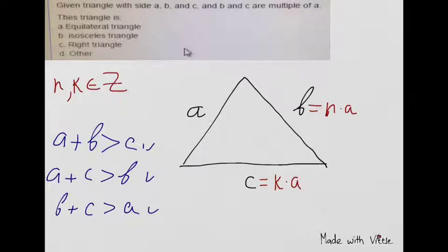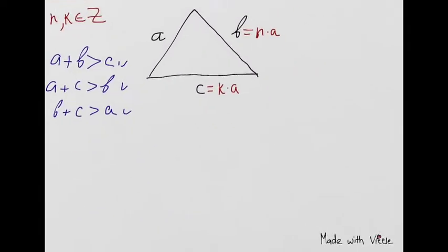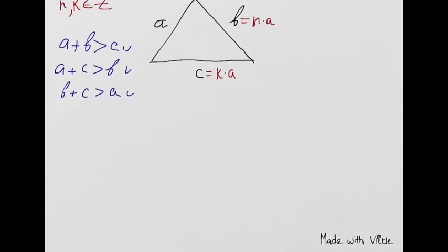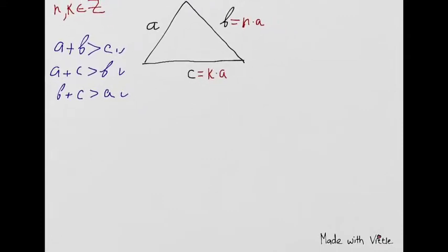Let's put instead of B and C, NA and KA correspondingly. This information that N and K belong to Z, the set of whole numbers or natural numbers, plays a very important role, because otherwise we cannot solve this task.